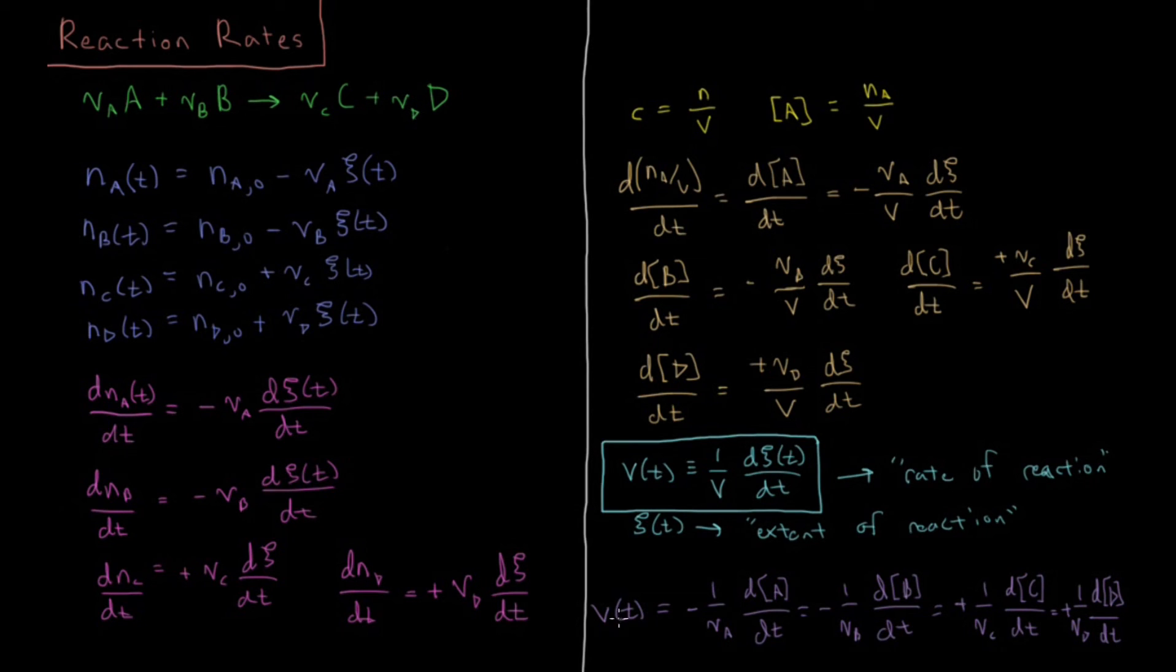So our rate of reaction is kind of how the rate of the reaction would be changing for something which has a stoichiometric coefficient of 1. And you'll notice here, our extent of reaction has units of moles, and then our time has units of seconds in SI units. And volume, we generally like to work with liters, so if you have moles per liter.